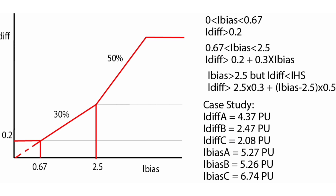If the differential current is less than that threshold, the relay will remain in the blocking or restraining region. The third region applies when the bias current is greater than 2.5 per unit but the differential current is less than the differential high-set value. For this region, the differential current must be greater than 0.75 plus (I_bias minus 2.5) times 0.5 to remain in the tripping region.